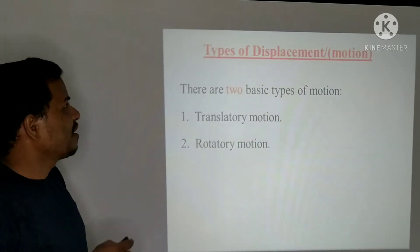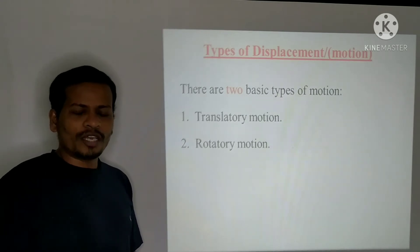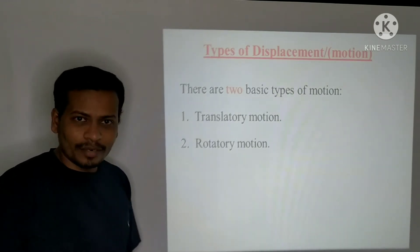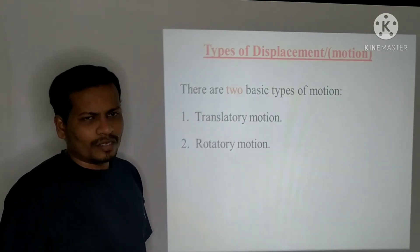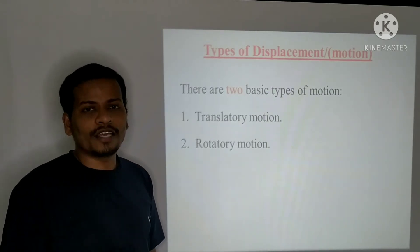First let us see what are the types of displacement of motion. Generally there are two types of displacement of motion which are translatory motion and the rotatory motion. There is a third motion which is not very common as compared to these two which is known as curvilinear motion.